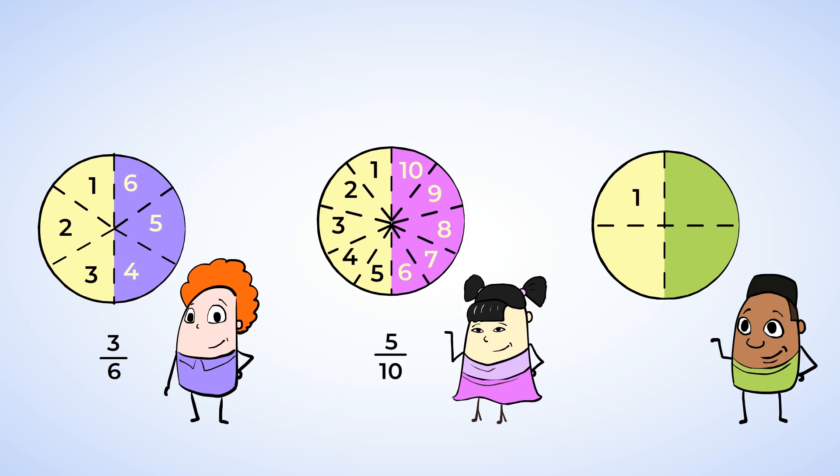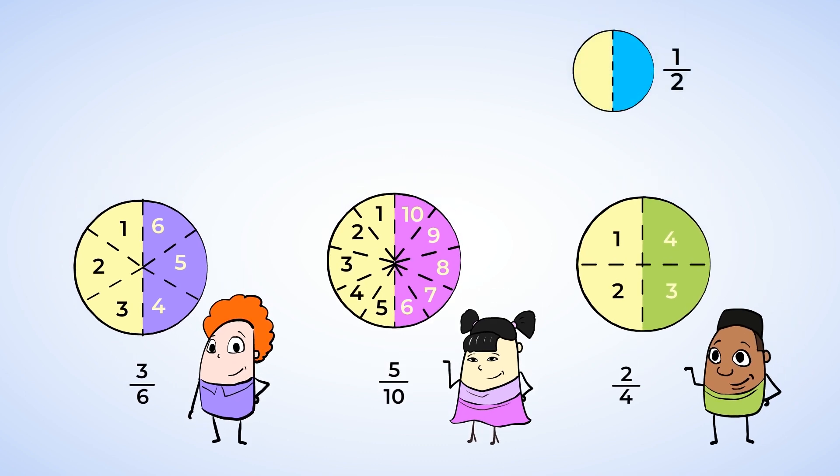And Juan only ate two pieces, which means that he ate two fourths of his pizza. Although each of these fractions look different, we can see that they all represent the same amount. One half. These are called equivalent fractions.